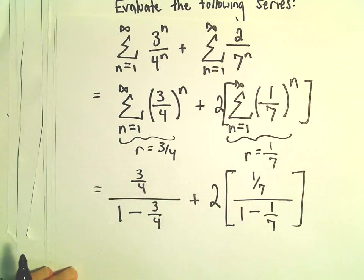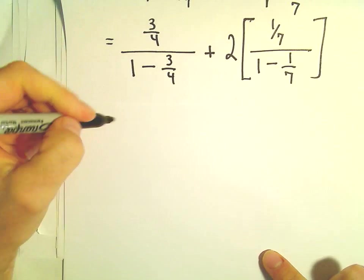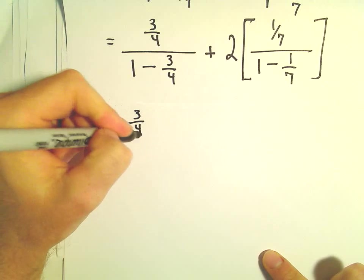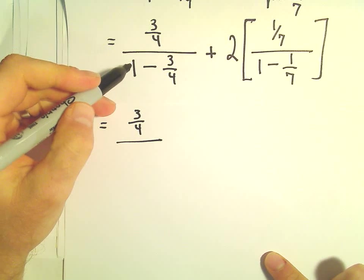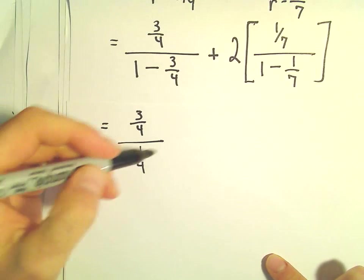And that's going to be the sum of the series. So now it's just a little bit of fun arithmetic. So this is 3 fourths, this would be 4 fourths minus 3 fourths, so that'll be 1 fourth in the denominator.